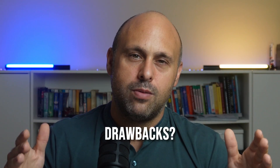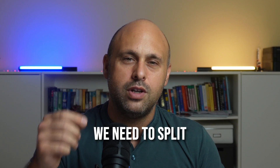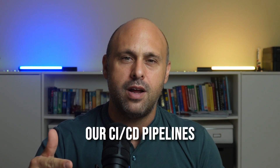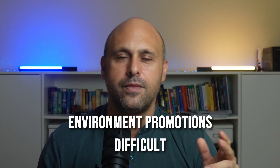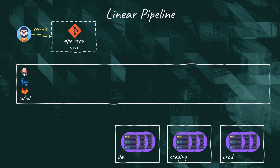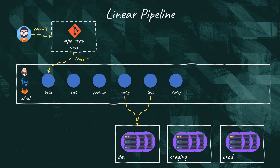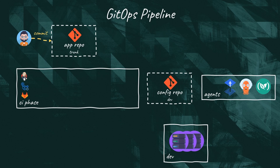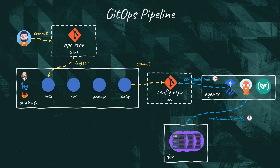Now, what about the drawbacks? The biggest challenge with GitOps is that we need to split our CI/CD pipelines across different tools, and that makes environment promotions difficult. In a typical setup, we can trigger a pipeline by approving a merge request on the trunk. The CI/CD tool is in full control and can pull the source code, build it, package it, and deploy it to all environments while running different sets of tests. In a GitOps world, such a linear pipeline is not possible, because the most popular GitOps tools like Argo CD and Flux CD are incapable of dealing with the continuous integration portion of our pipelines.